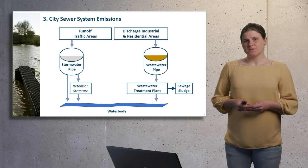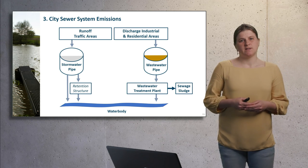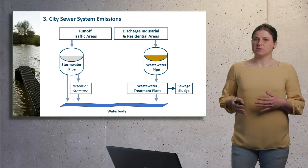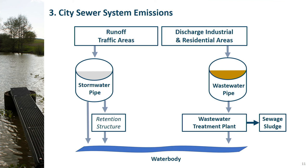In contrast, in separated systems, stormwater is treated in separate pipes and sometimes retention structures exist. Most times, stormwater from street runoff is directly discharged into a river, as shown on the left side of the figure. But in this system, wastewater from households and industry is always routed to the wastewater treatment plant and treated before being discharged into a river.